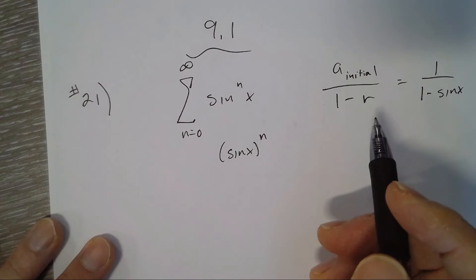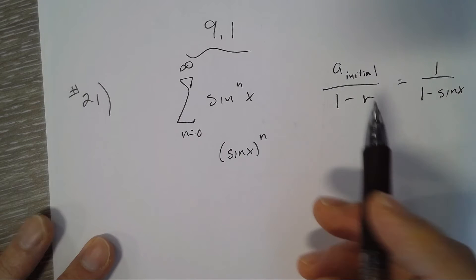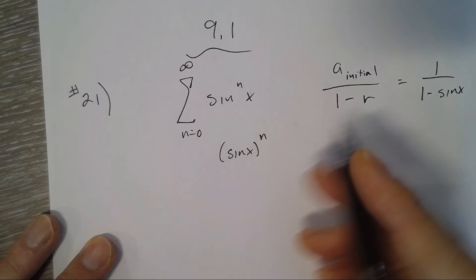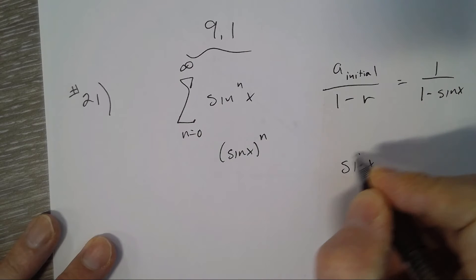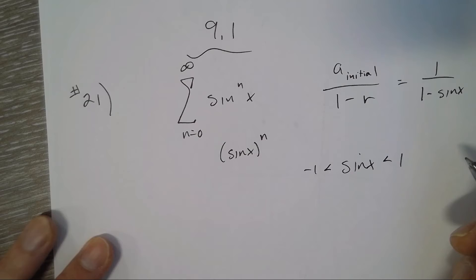So find the values of x for which the geometric series converges. That's only if sine x is greater than negative 1 and less than 1.